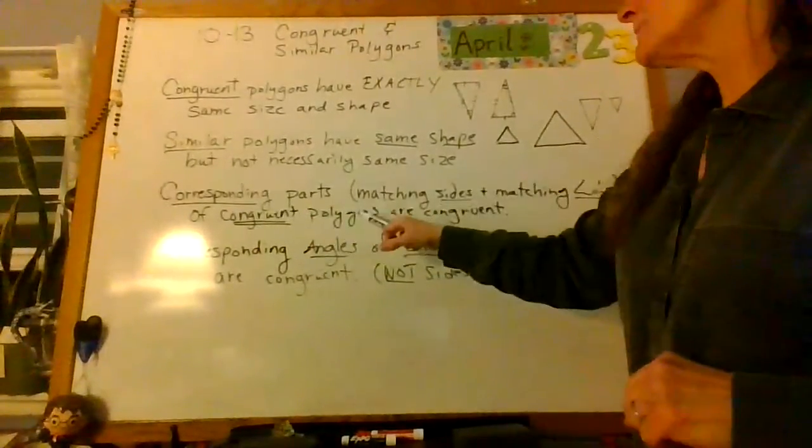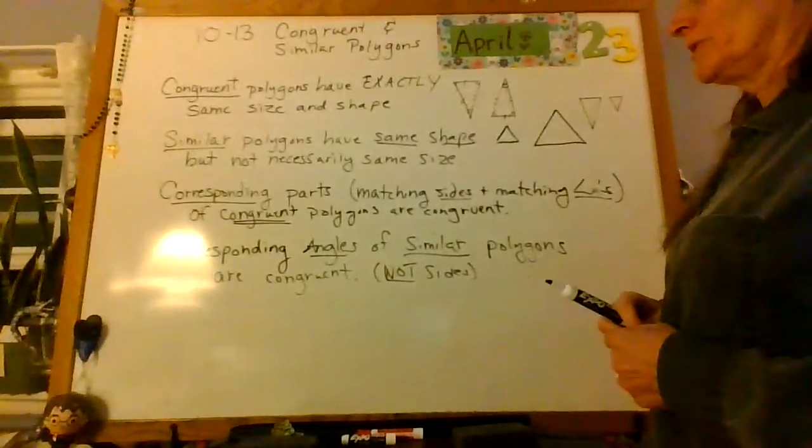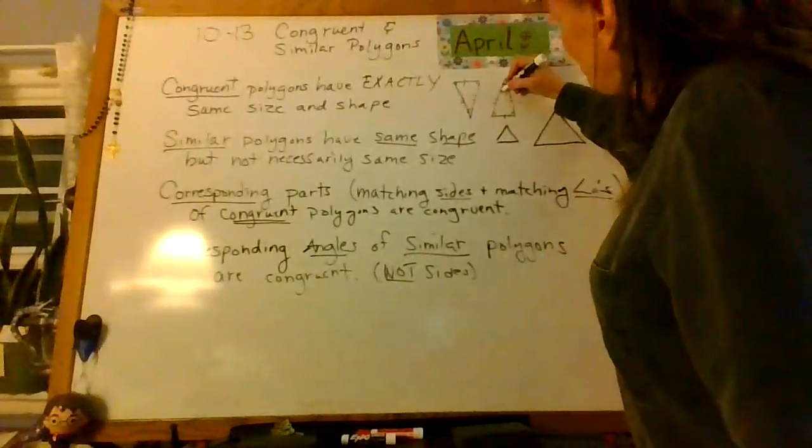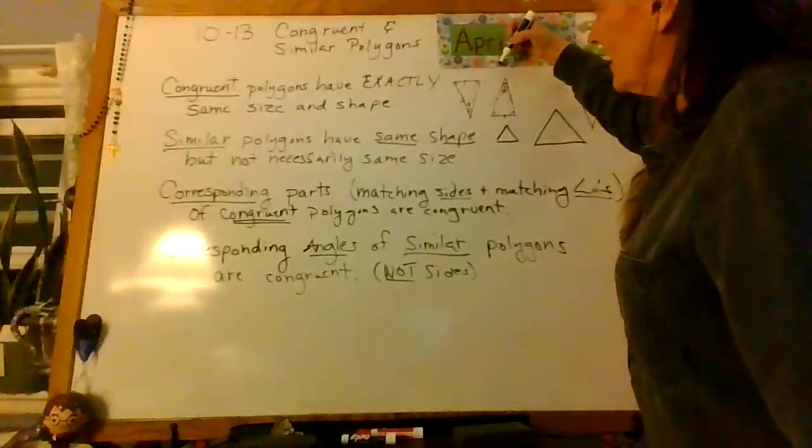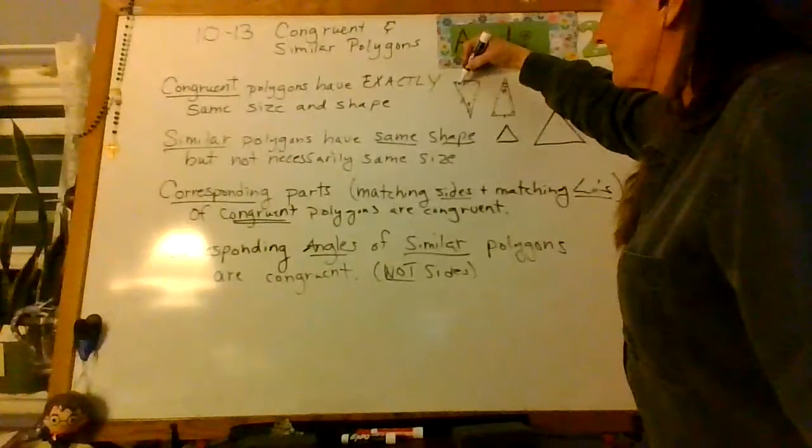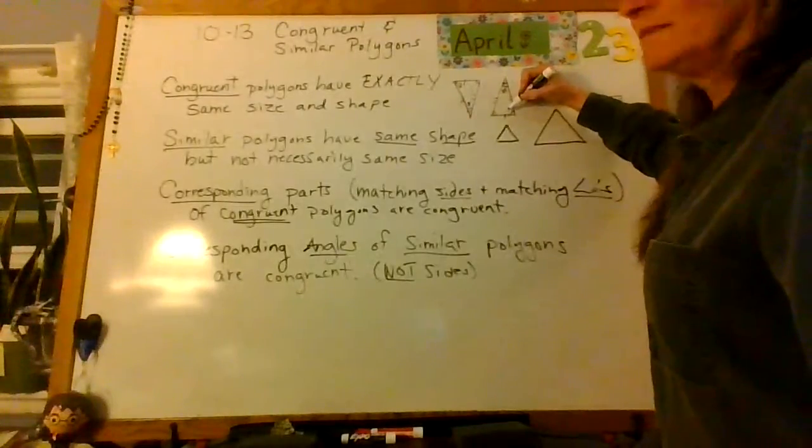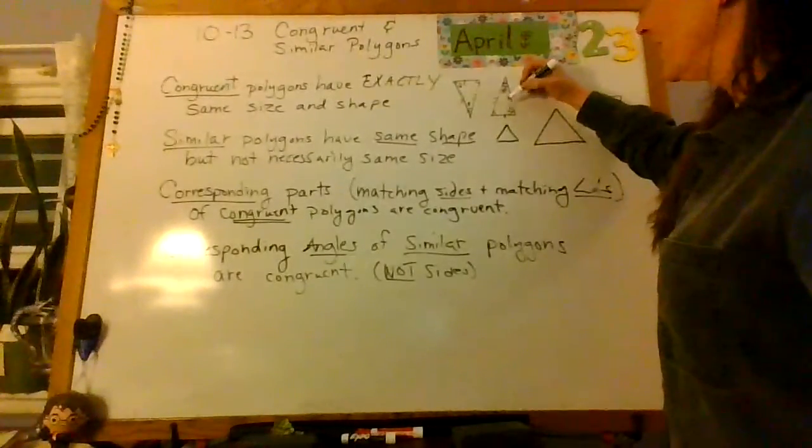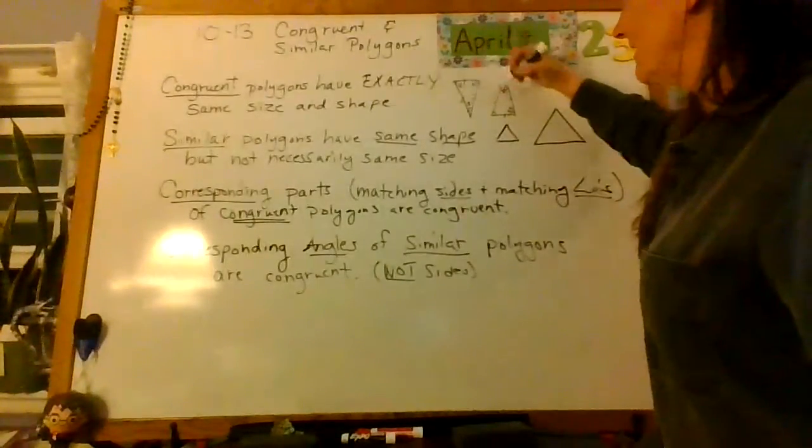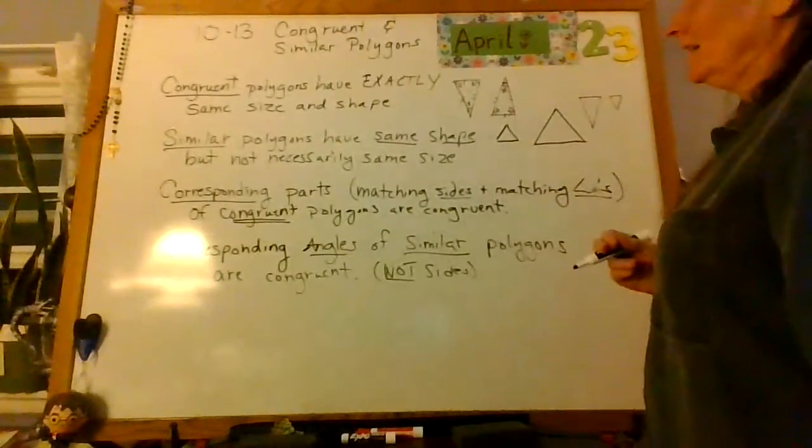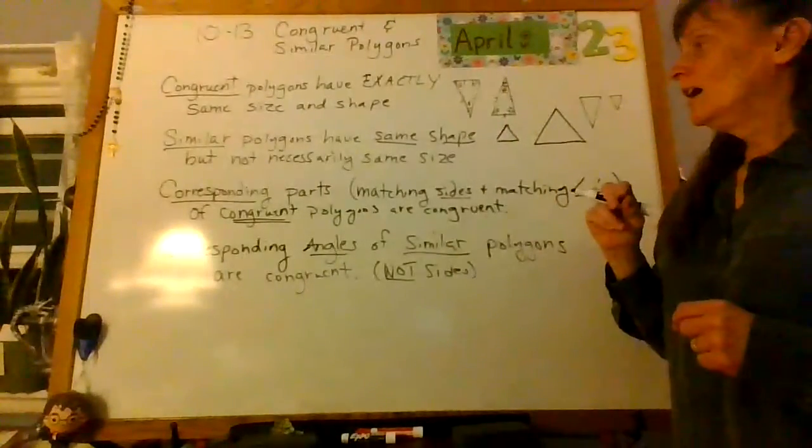All right. So, if you have congruent polygons, then the matching sides and the matching angles are also congruent. So, if I said this was 50, and this was... What would this have to be? 50. If I said this was 65, what would this have to be? 65. They match, right? That's one. That's one. If I flip those, they'd be the same. And this would be 65. And this would be 65. And that should add up to 180 because that is what the inside of a triangle equals.